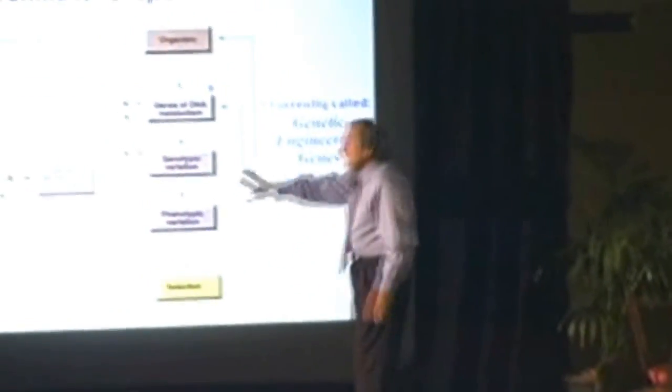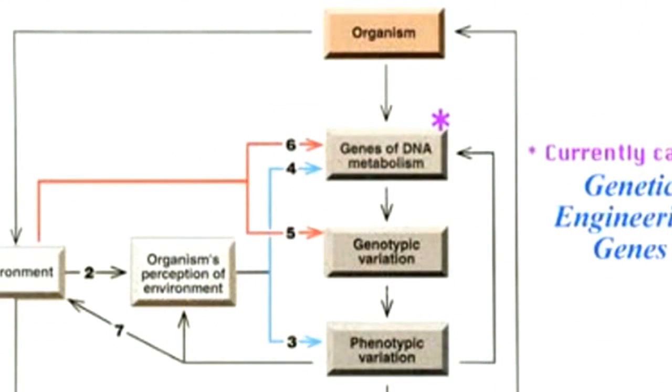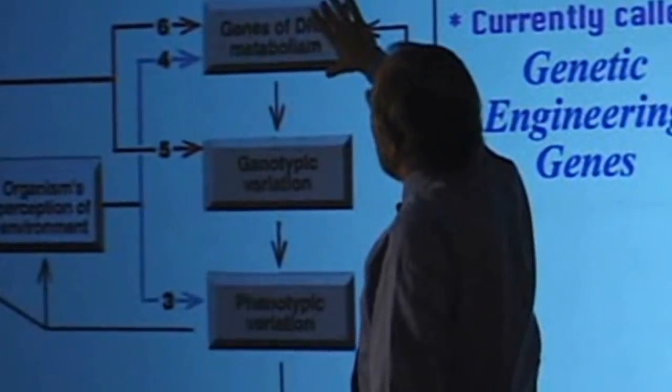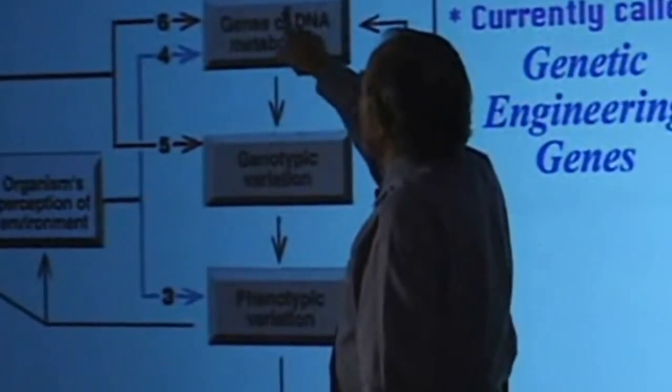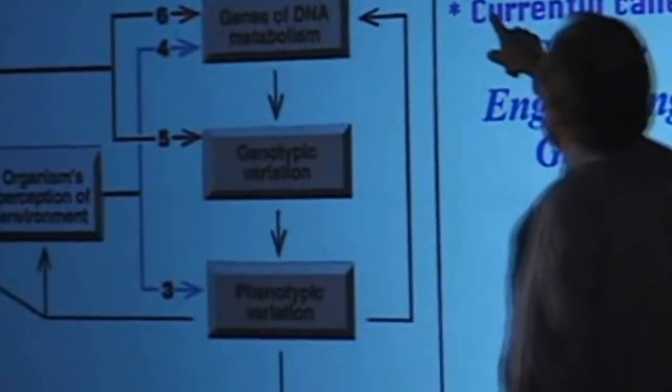And so this chart out of Science, which is about Cairns' work about genetic changing - I marked this one with an asterisk because when this article came out, this box was called genes of DNA metabolism. There's now a new name for that - it's now called genetic engineering genes. What this means is this: we have now found out that in every one of your cells you have genes whose function it is to rewrite the other genes when necessary. So you are all equipped with an ability to adapt and change your genes as you respond to the environment.